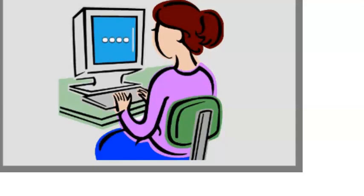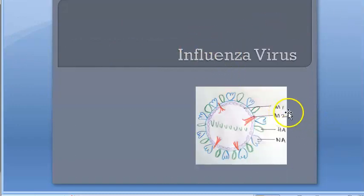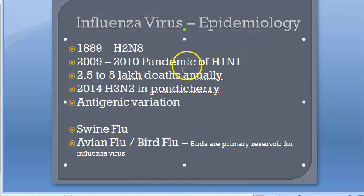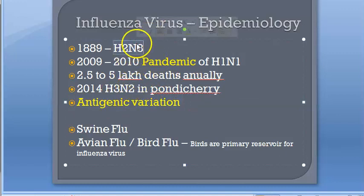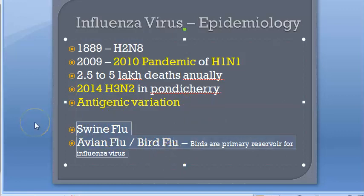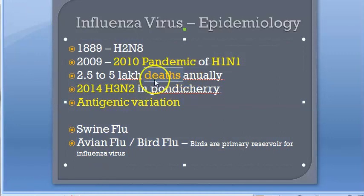To recap: influenza virus is important for exams and has caused many pandemics due to antigenic variation — H2N8 in 1889, H1N1 in 2010, H3N2 in 2014. It also infects pigs and birds, causing swine flu and bird flu, which can spread to humans — which is why culling of infected or suspected animals is ordered.